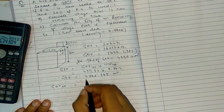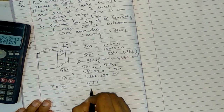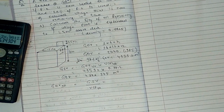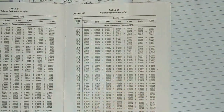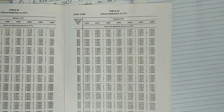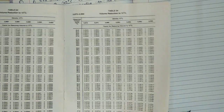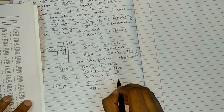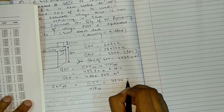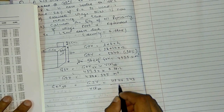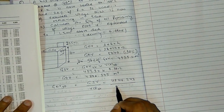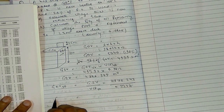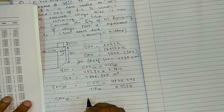Next we need to find GOV at 50 degrees Celsius. GSV at 50°C equals GSV divided by VCF at 50 degrees. We find VCF at 50°C from the table — it is 0.9737. So GOV at 50°C equals 4846.343 ÷ 0.9737 = 4977.244 cubic meters.